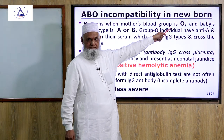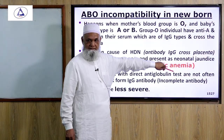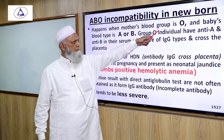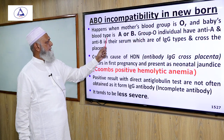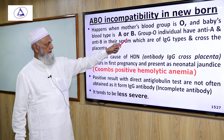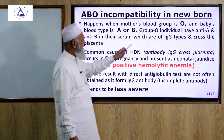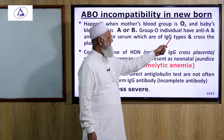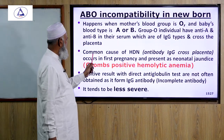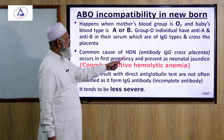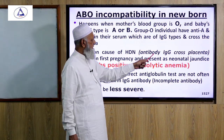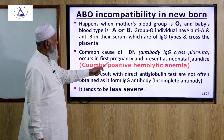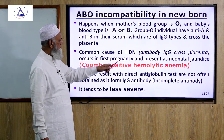ABO incompatibility in the newborn occurs when the mother's blood group is O and the baby's blood type is A or B. Group O individuals have anti-A and anti-B antibodies in their serum, which are of IgG type and can cross the placenta. This is a common cause of hemolytic disease of the newborn (HDN), as the IgG antibody crosses the placenta, occurs in the first pregnancy, and presents as neonatal jaundice.